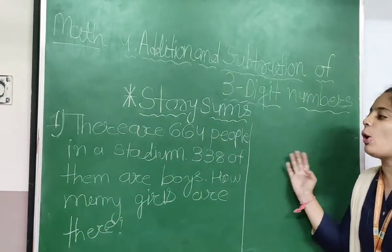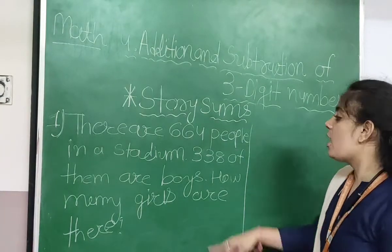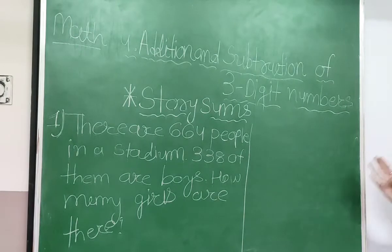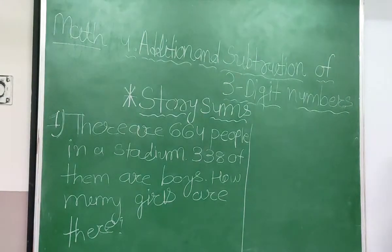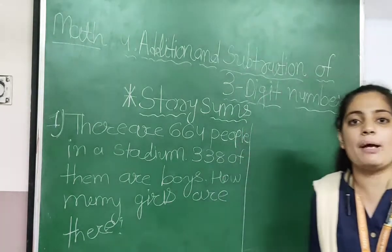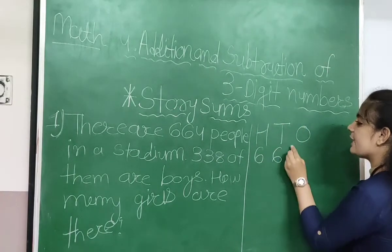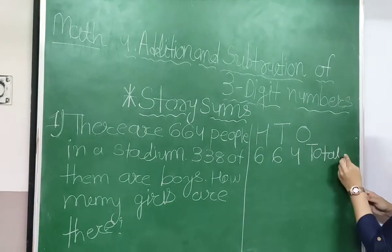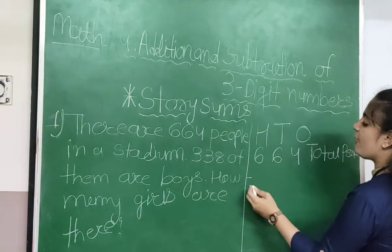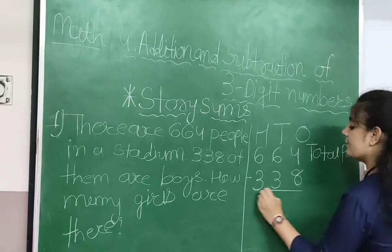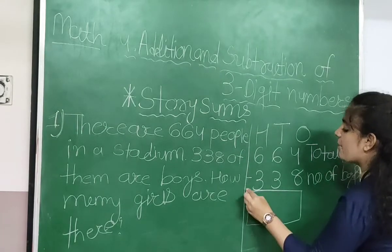Example 1: There are 664 people in a stadium. 338 of them are boys. How many girls are there? We are supposed to find how many girls are there in the stadium. Let's start counting with hundreds, tens and ones. 664 total people — we are supposed to subtract 338 number of boys. Then only we will find the number of girls.